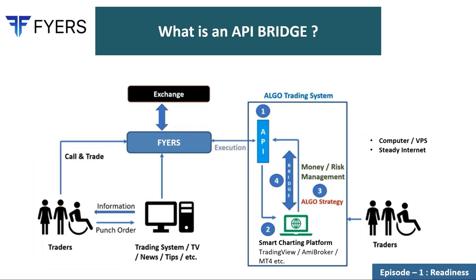As I mentioned in the previous episode, there are a couple of things that are essential for you. One is an API, second is a smart charting platform, third is a bridge that is going to connect between the smart charting platform and the API, and fourth, definitely, is a strategy.